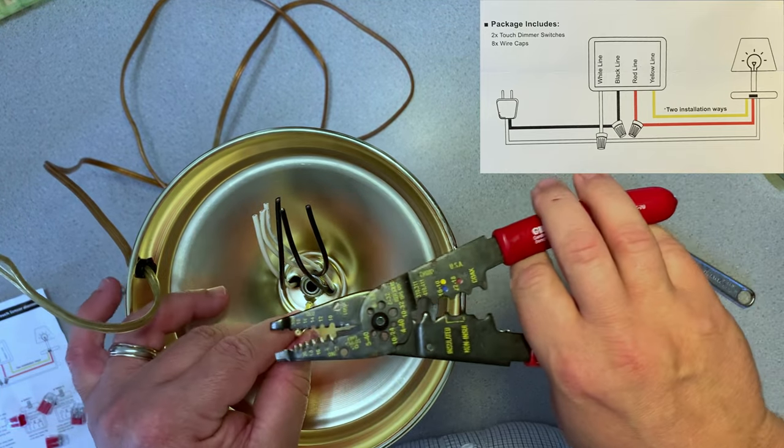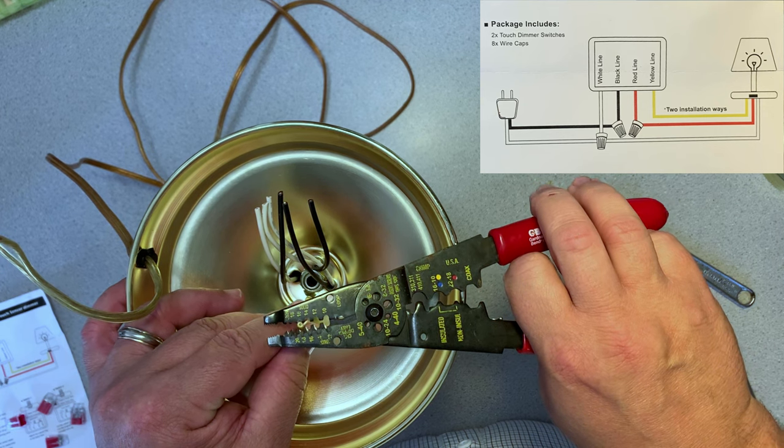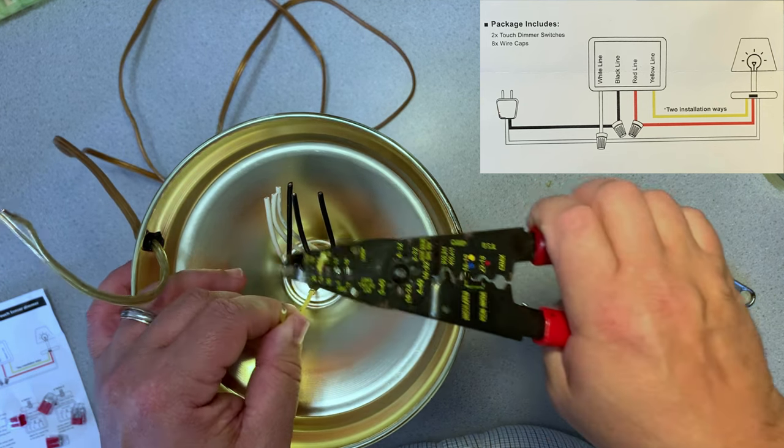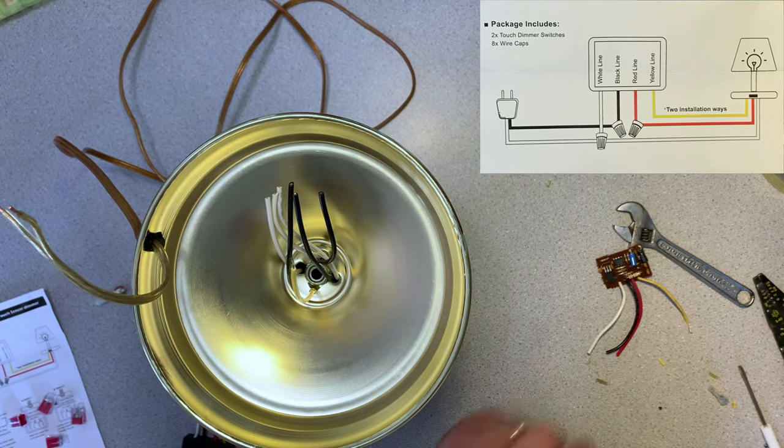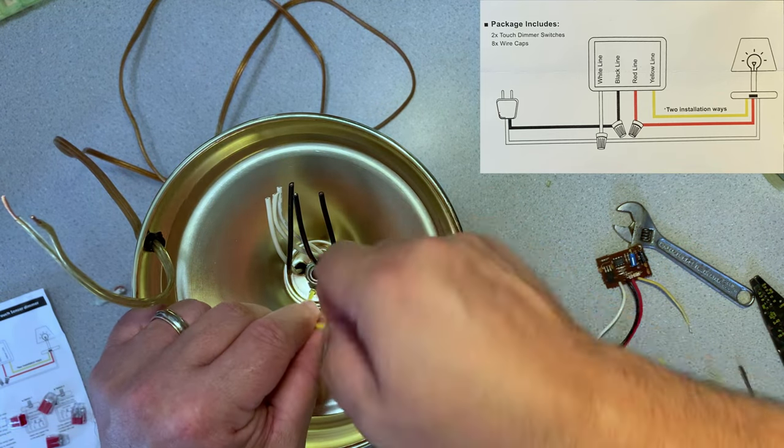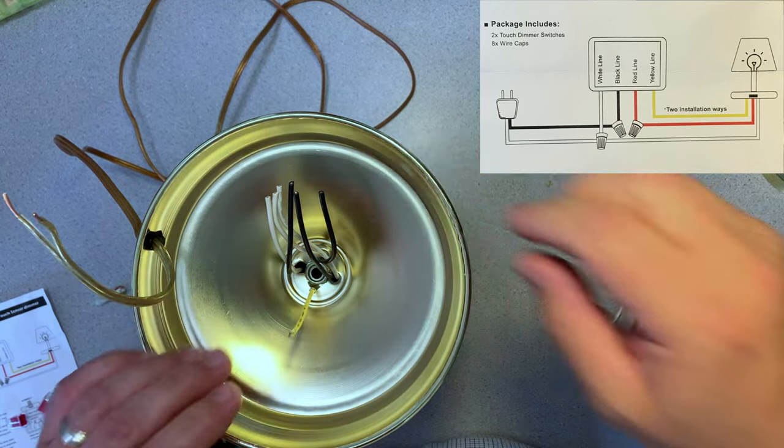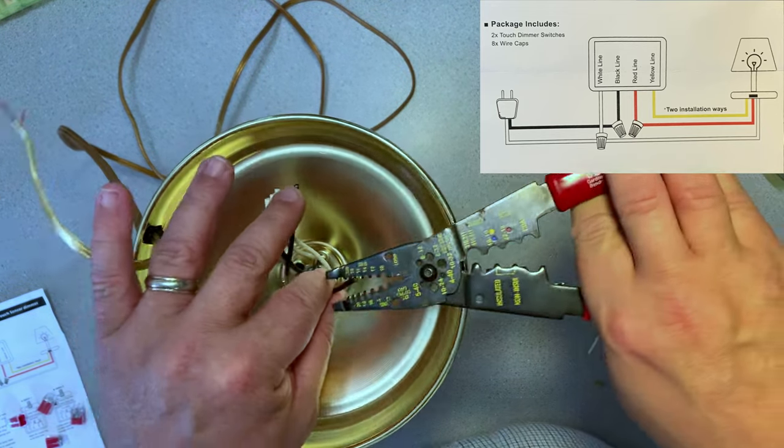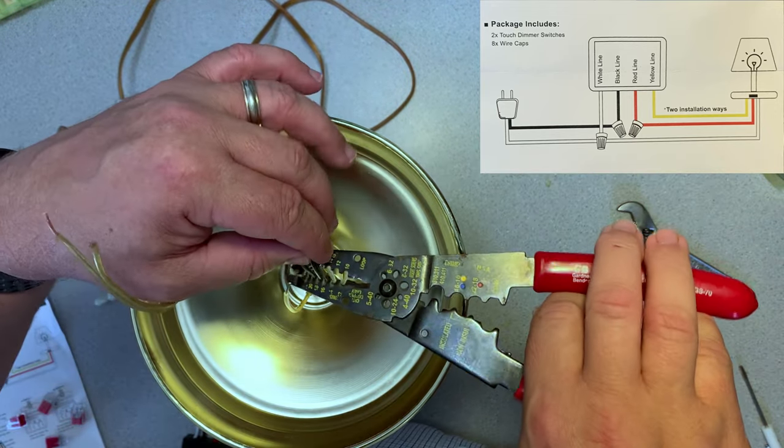To install the new module, I cut away all of the old wires to make sure that I have clean ends to work with. I will use my wire strippers to pull back just a little bit of coating on the outside of the wires.